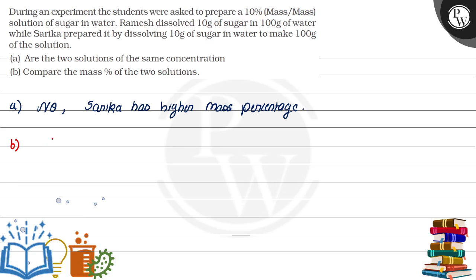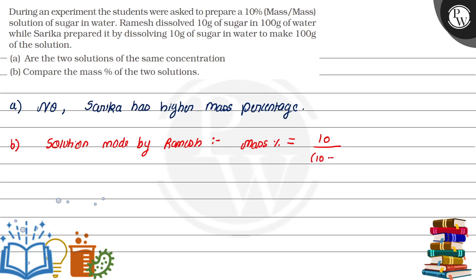So, if we talk about the solution made by Ramesh, the mass percentage will be: mass of solute upon mass of solution, that is 10g of sugar divided by (10g of sugar plus 100g of water), into 100.